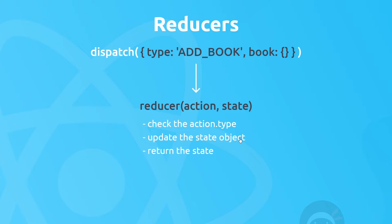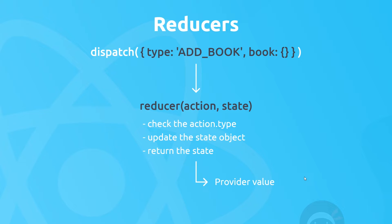In this case it would add a book — it takes the state and adds the new book to it. If it was a 'delete book' type, it would check the action type again and delete that book from the state; the payload in that case might be the ID of the book to delete. Once we've updated the state, we return it, and that goes back into the provider value. When we provide it to different components and they consume it, they'll get that updated value and re-render appropriately. That's the basics of how a reducer works from a bird's-eye perspective.